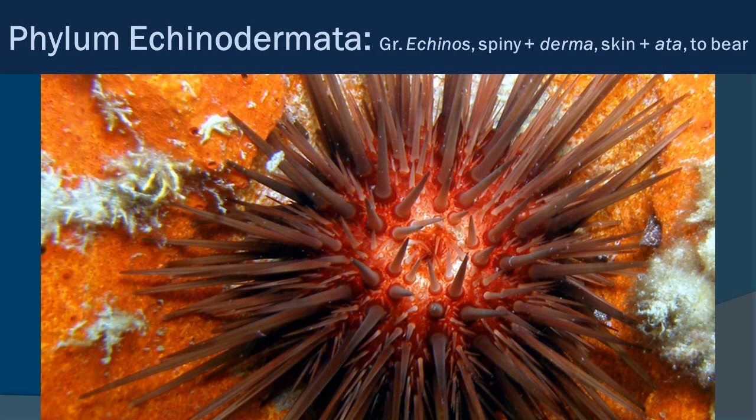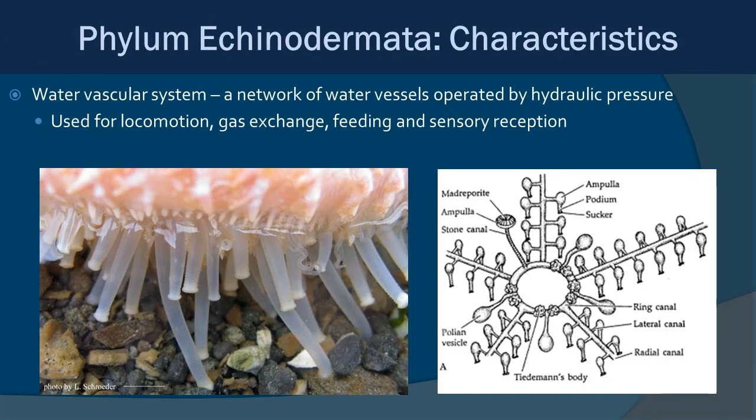Now phylum Echinodermata — one of my favorites. In Greek, 'echinos' means spiny, 'derma' means skin, 'ada' means to bear: to bear spiny skin, which makes sense with a sea urchin. One of the biggest unique features is the water vascular system — a network of water vessels operating through hydraulic pressure. They use this system to power tube feet, which help with locomotion, gas exchange, feeding, and sensory perception.